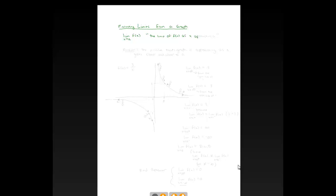The notation reads: the limit of f of x as x approaches a. This is shorthand notation, and it's really asking a question. The answer to this question is always going to be the y-value that a graph is approaching as x gets closer and closer to a.